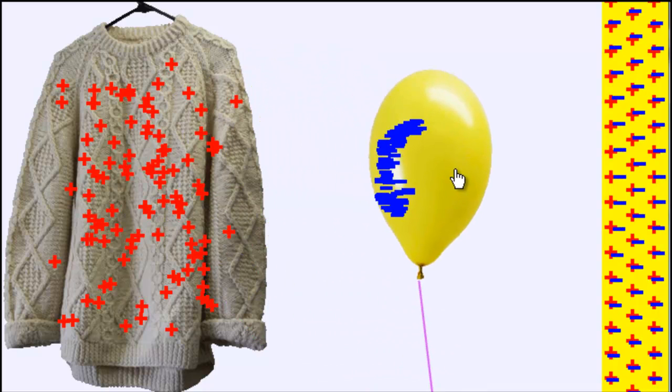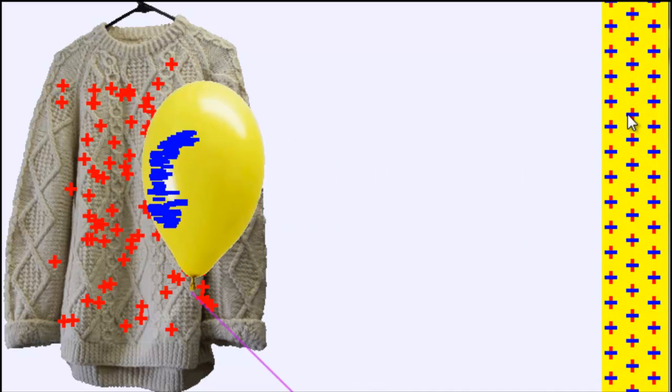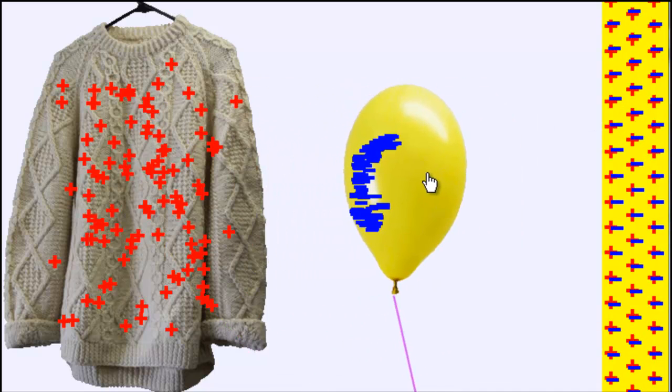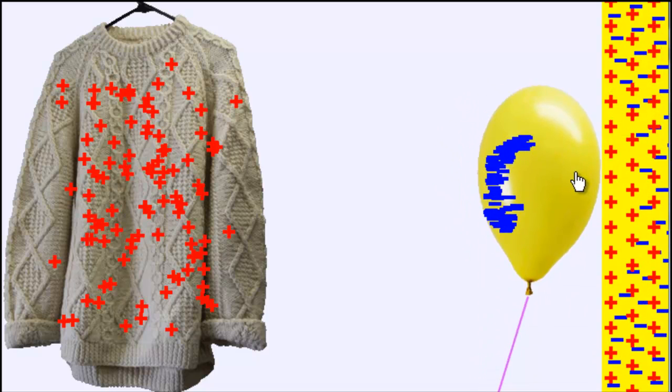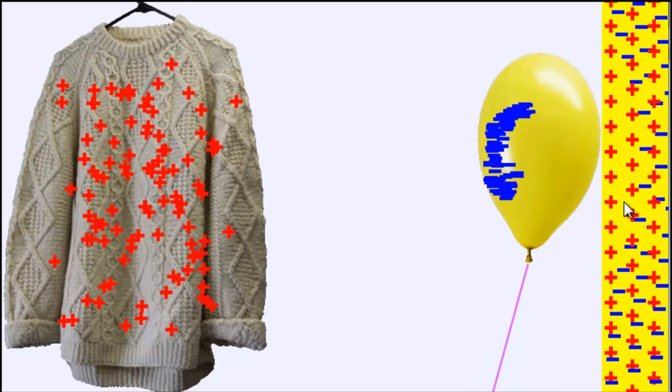But if I bring the balloon over, notice what happens to the negative charges in the wall. The negative charges can move, they're mobile, and they're repelled by the balloon, leaving a patch of the wall that is positively charged.